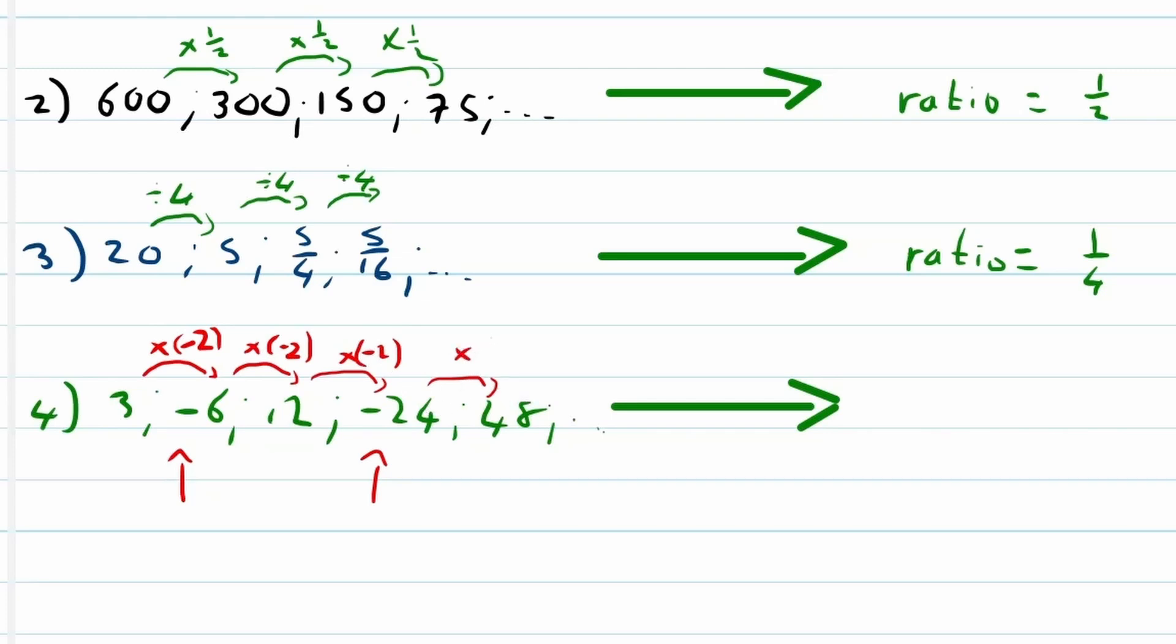And we see the same pattern repeat itself. Negative 24 times negative 2 is 48. This means our constant ratio over here with this geometric sequence is negative 2.